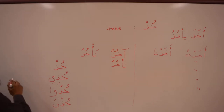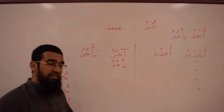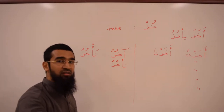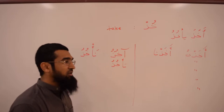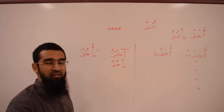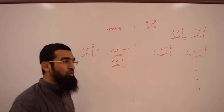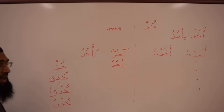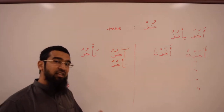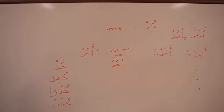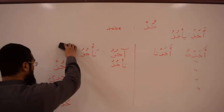They all mean 'take.' So if you want to tell someone to take something — take this pen: khud al-qalam; take this money: khud hadha al-mal. The word after the command — the thing you're telling them to take — is the maf'ulun bihi, and the maf'ulun bihi is mansoob.